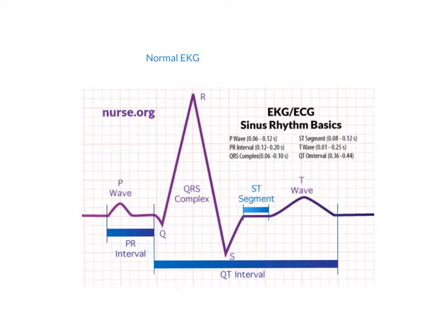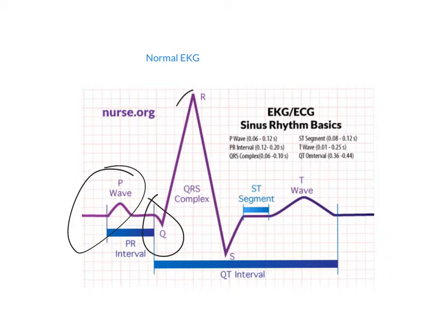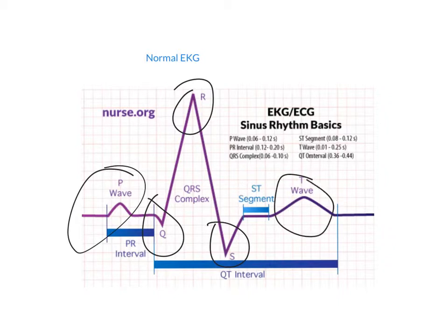Hi, so I made a video on EKGs because I know that it's a hard subject for everyone. We're just going to start out with a normal EKG. This is what a normal EKG looks like. You have your P wave right there. Then you have your Q, your R, and your S, which go together — that's called your QRS complex. Your QRS complex is basically the ventricles contracting. And then we have our T wave, which is the relaxation. That's basically what you need to know in order to understand the heart rhythms.